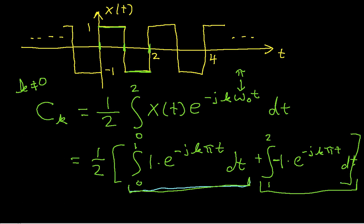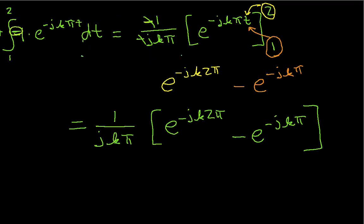So we'll go to the second term that we found and look at this one first. Some interesting things occur here. If I look at this e^(-jk2π), you'll recall that k is always an integer - it could be negative or positive but it's always an integer.